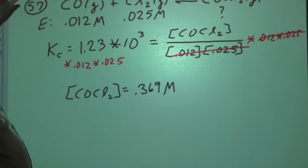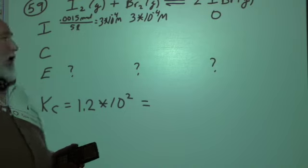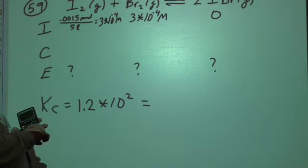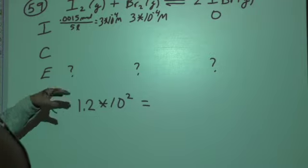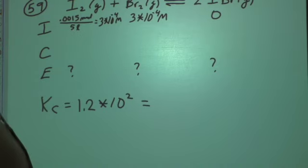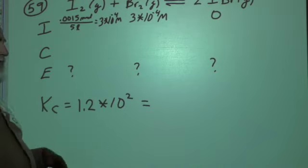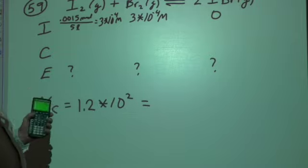The next one is much more challenging. This is where quad form comes into play. In this particular case, on problem number 59, we're given 0.015 moles in a 5 liter container. Since we need concentration to use Kc, we have to divide those out and get 3 times 10^-4 moles per liter. This is going to go for a change.